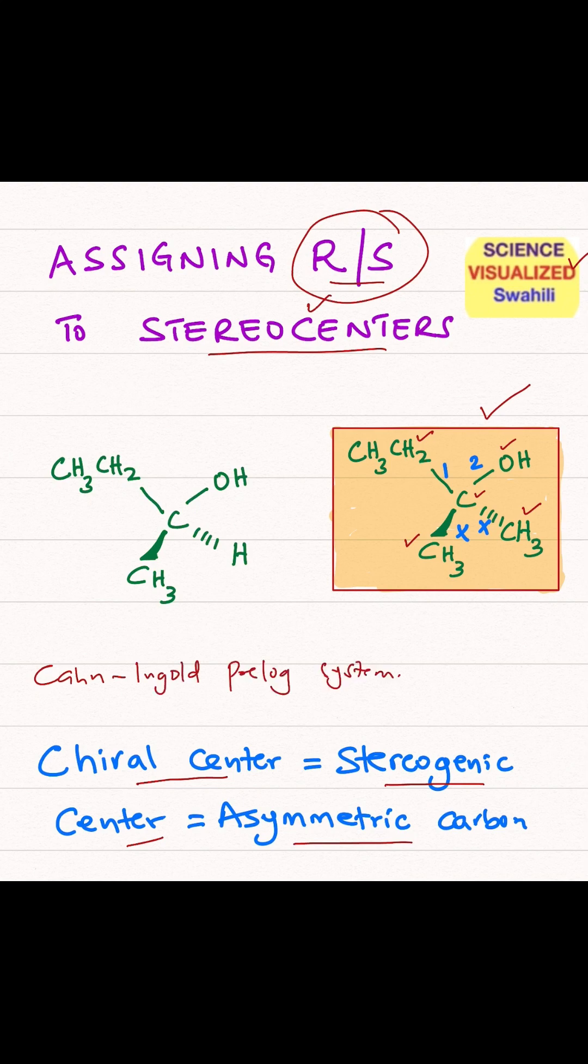So first, number one, you want to prioritize the groups so that the heavier group you give it a higher priority. In this case, you have an OH here which has a mass of 16 compared to a hydrogen which has a mass of 1. Oxygen has a mass of 16. Here we have carbon which has a mass of 12.